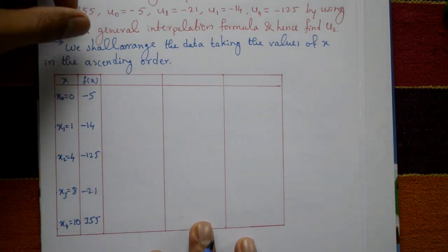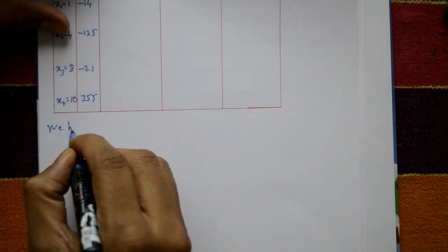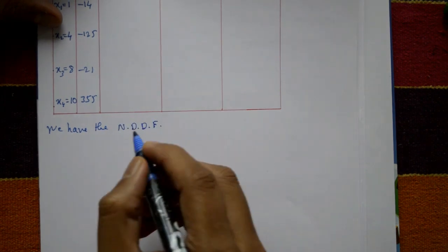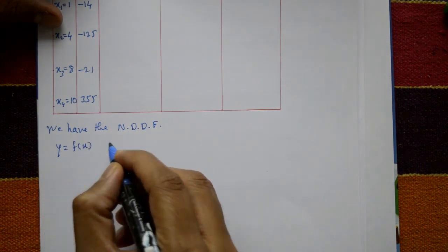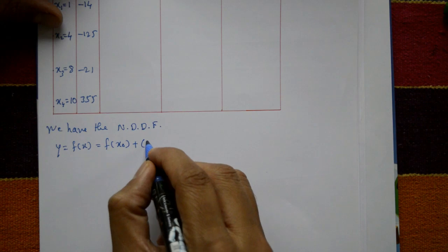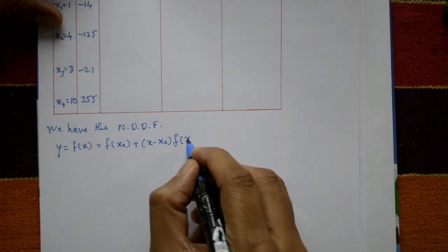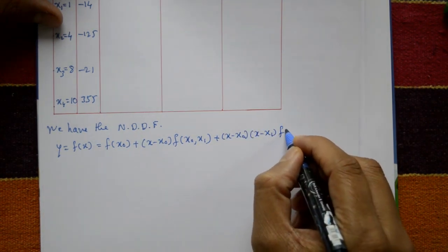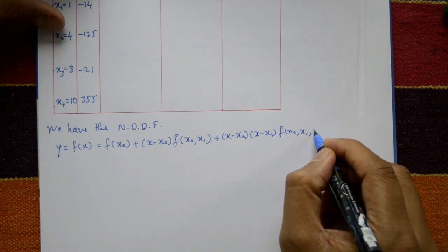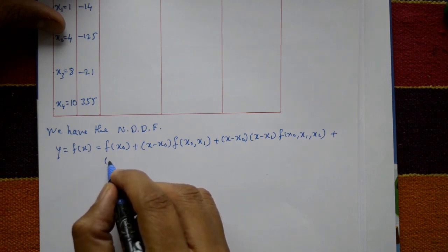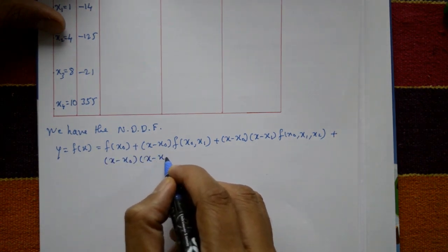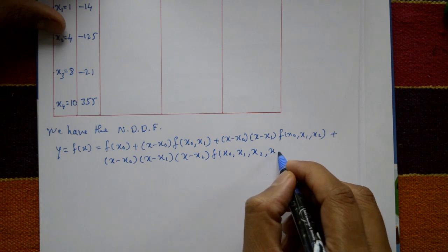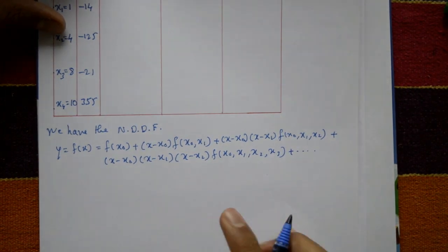We have Newton's divided difference formula: Y = F(x) = F(X0) + (x - X0)·F[X0, X1] + (x - X0)(x - X1)·F[X0, X1, X2] + (x - X0)(x - X1)(x - X2)·F[X0, X1, X2, X3] + so on.